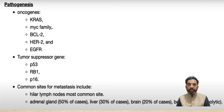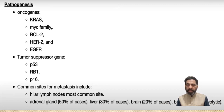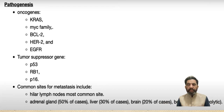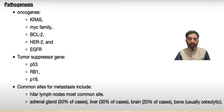The oncogenes especially K-RAS, myc family, bcl2, HER2, and epithelial growth factor receptors - when these are overexpressed and their function is enhanced due to mutation of our genes, the cell cycle becomes rapid and more and more cells are produced in the lungs, causing carcinoma. Another thing is that if tumour suppressor genes like p53, p63, p22, p16, and RB1 are affected, they will also result in carcinoma of the lungs.